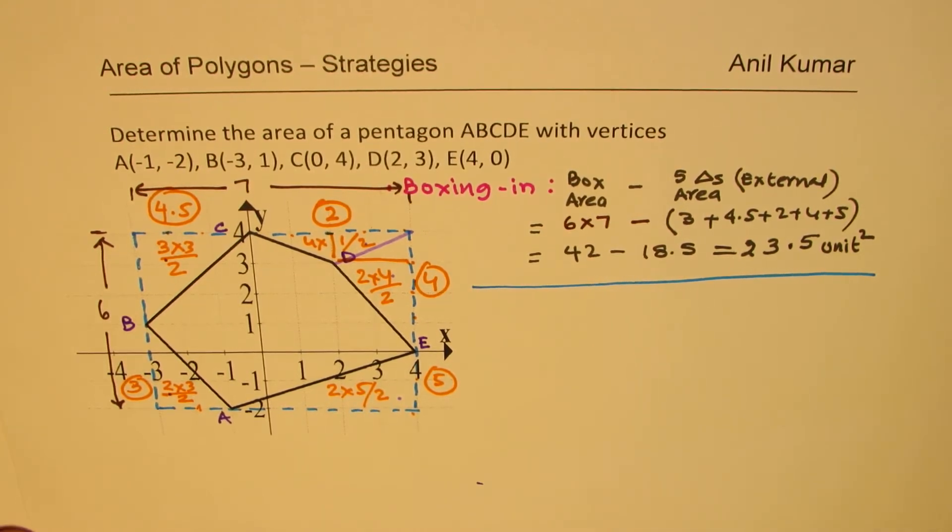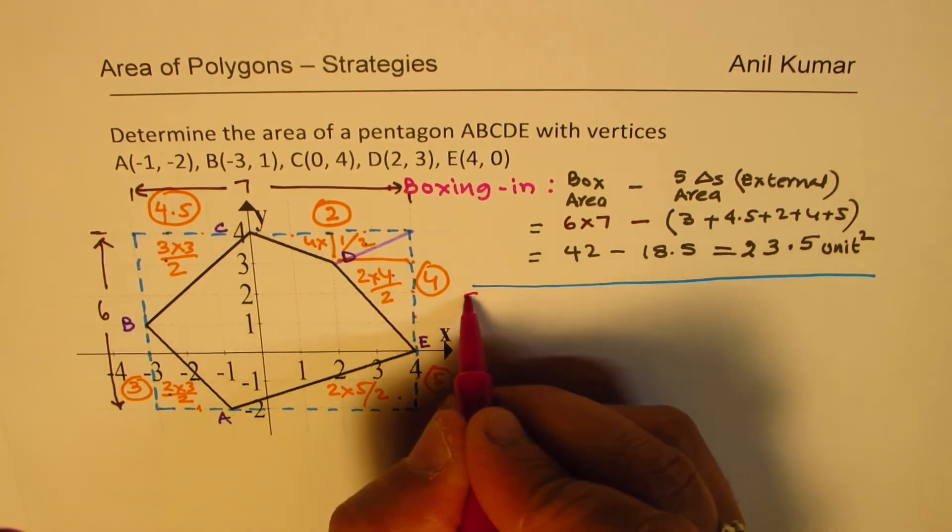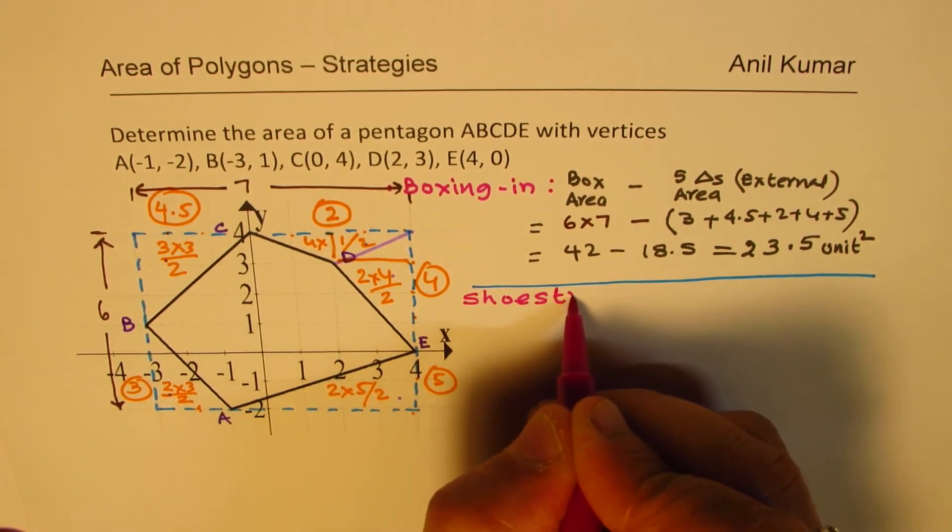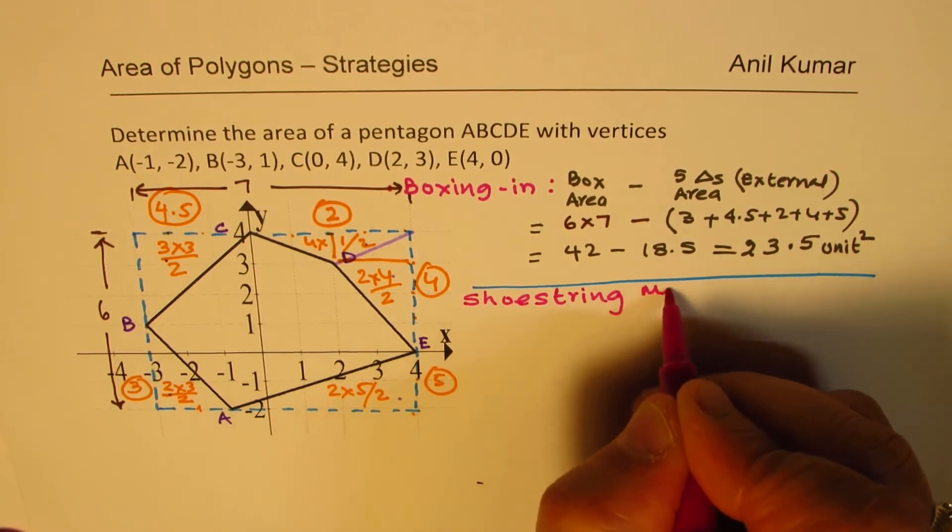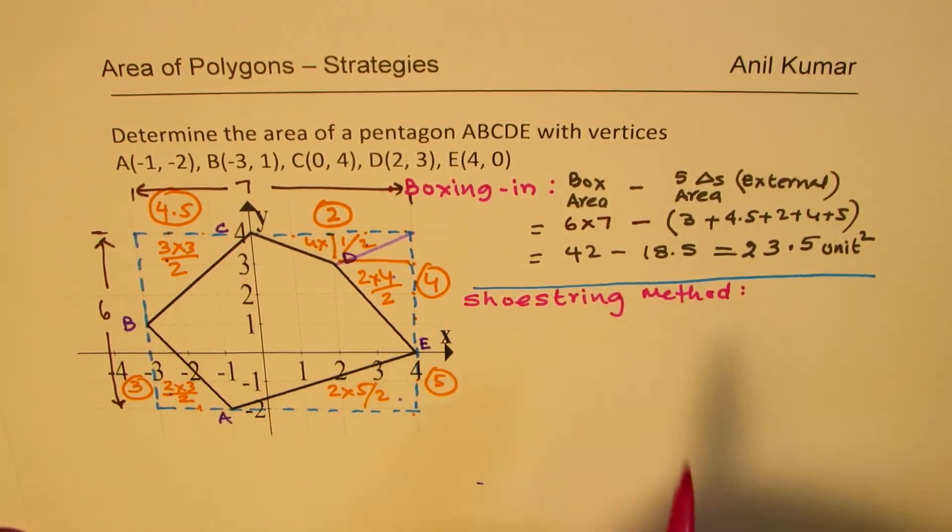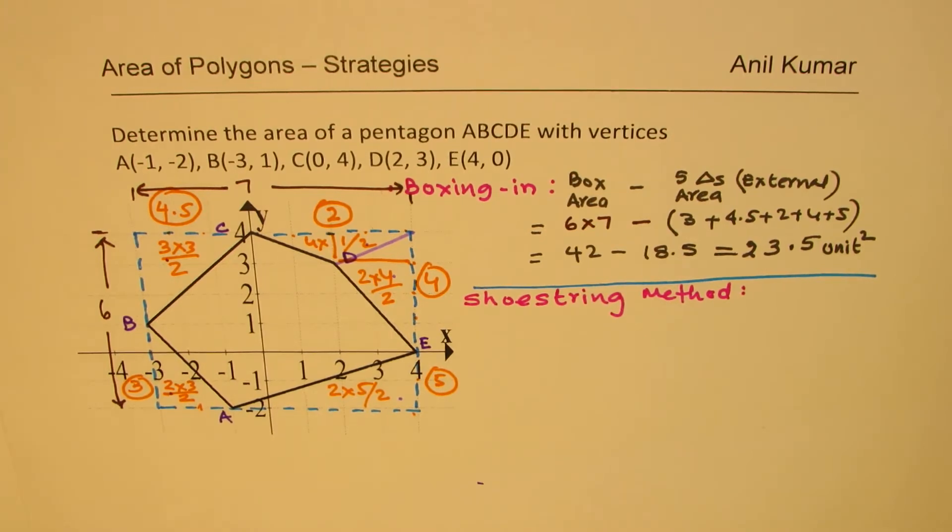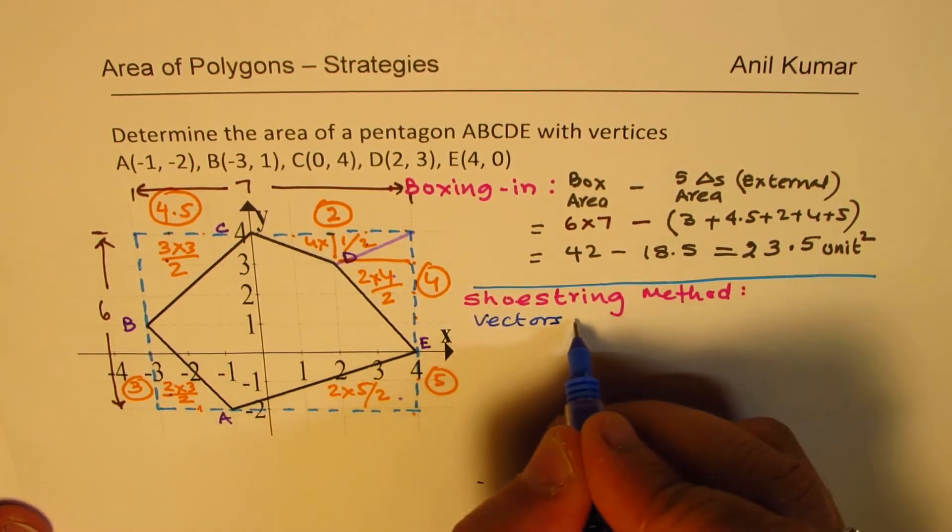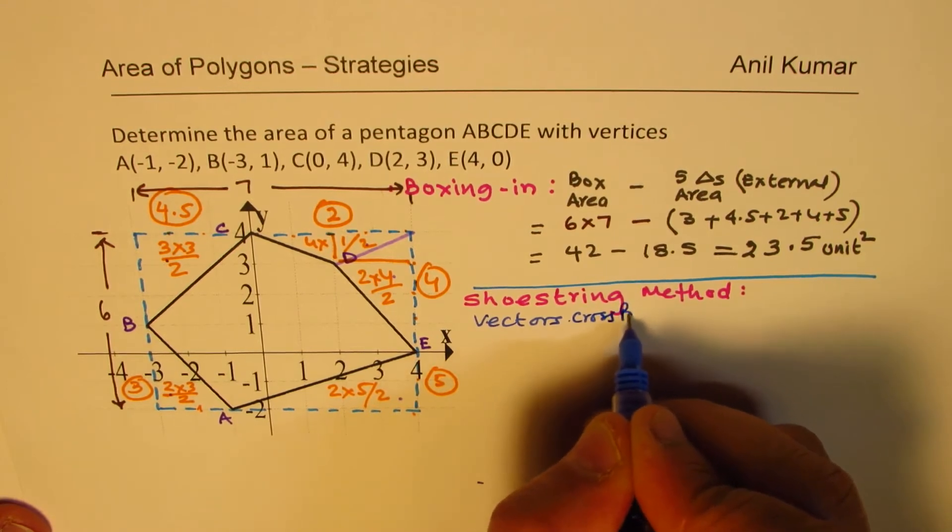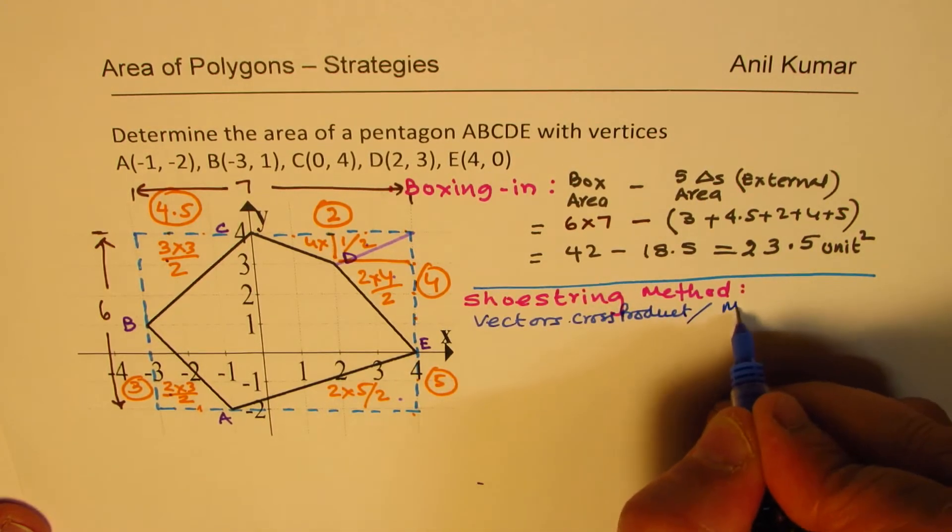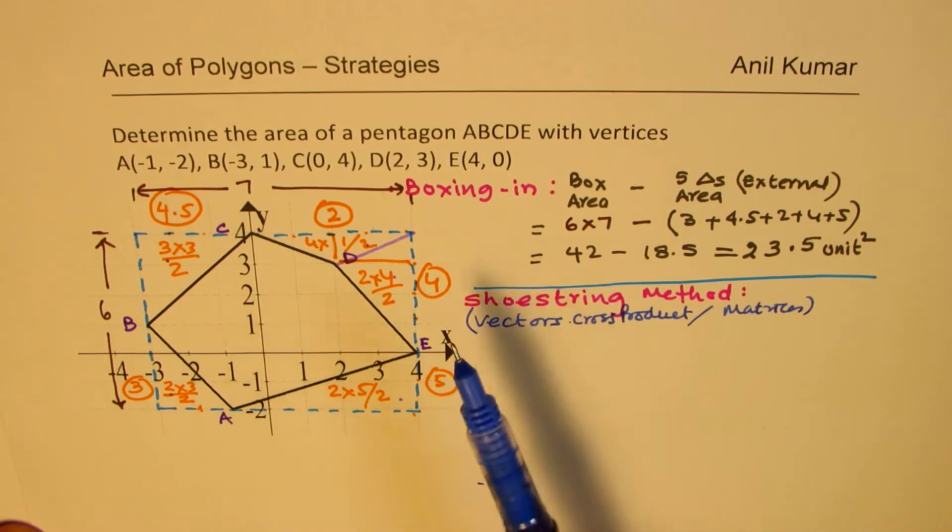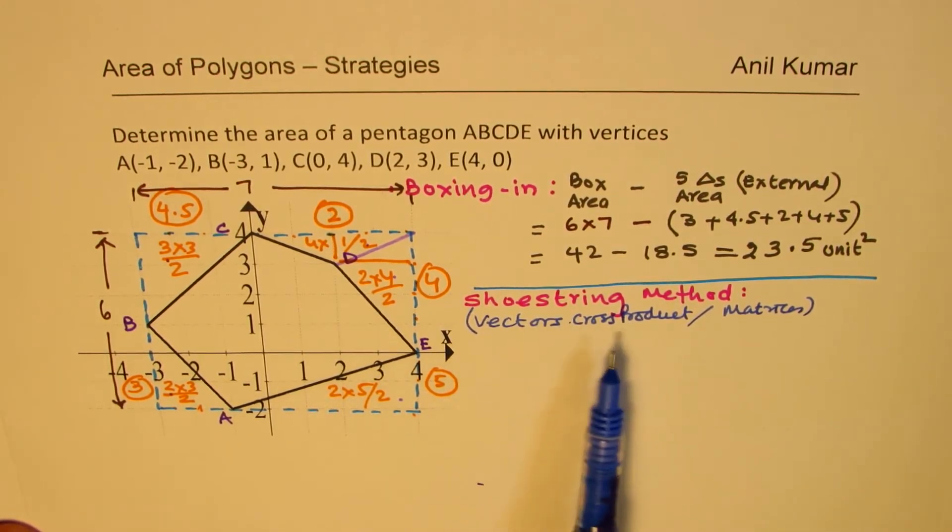Now, we'll also talk about second strategy, which is called shoestring method. Well, some of you who have done vectors might have used this cross product. Or if you've done matrices, you use a similar method. But here, for most of you who haven't done all this, we'll give you the formula to work with.